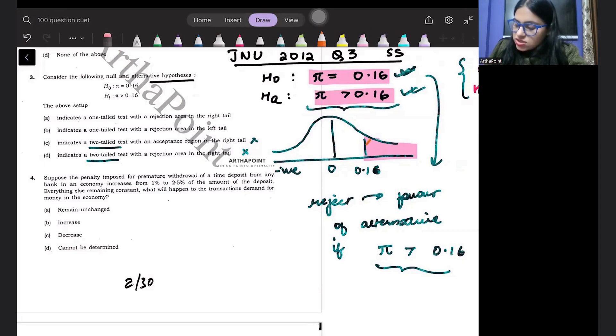So, my rejection region is this region. If I get some value of π which is more than 0.16, then I will reject null in favour of alternative. So, my rejection region is going to be towards the right. Where is rejection region? It will be towards the right.